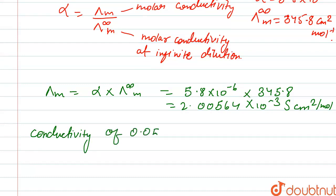So we multiply by 0.05: 2.00564 × 10⁻³ × 0.05.